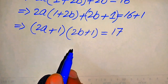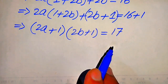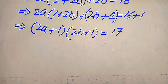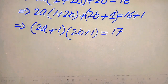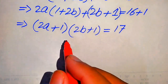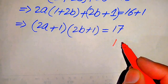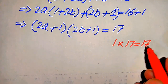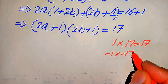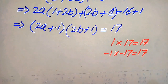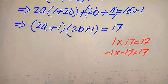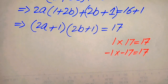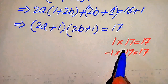On the left hand side we have 2 factors multiplied by each other, but on the right hand side we have only one value, 17. We need to find 2 numbers whose product equals 17. There are 2 cases: 1 times 17 equals 17, and minus 1 times minus 17 also equals 17. We divide our equation into 2 cases according to these options.